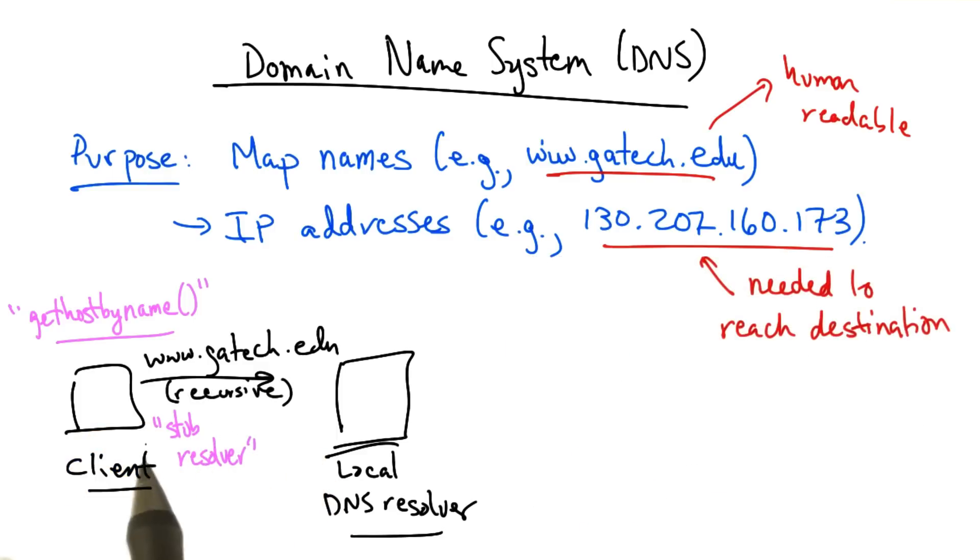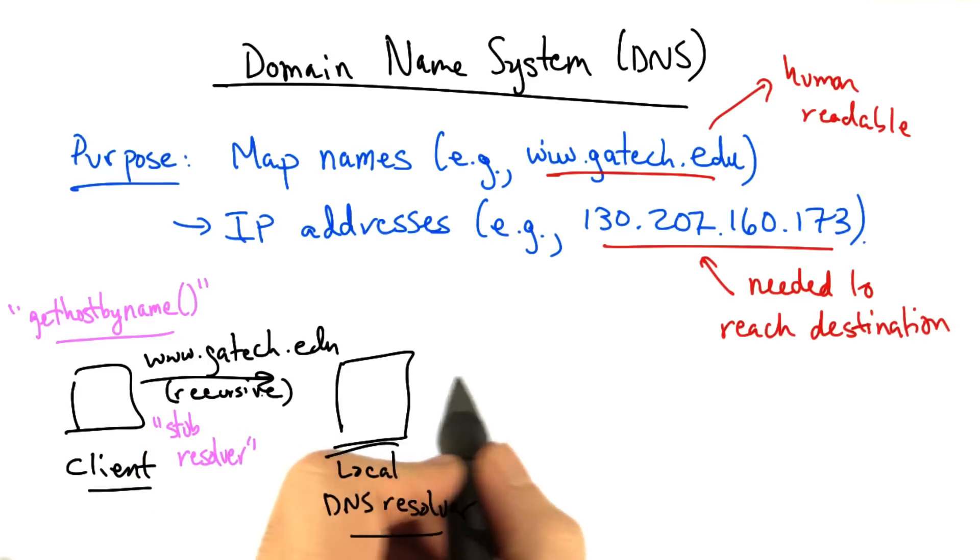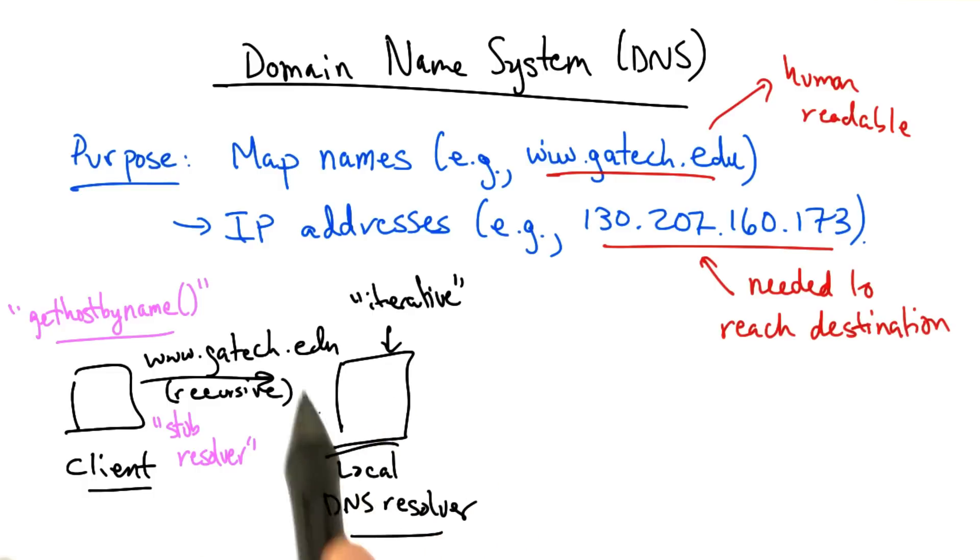This query is typically issued recursively, meaning that the client does not want intermediate referrals sent back to it. It only wants to hear when it's received the final answer. The local resolver, on the other hand, will perform iterative queries. It might have the answer to this particular query in the cache, in which case it would simply reply with the answer.